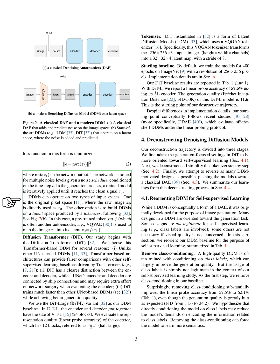DDMs can work with two types of input spaces. One is the original pixel space, where the raw image is used directly. The other option is to build DDMs on a latent space produced by a tokenizer. In this case, a pre-trained tokenizer is used to map the image into its latent representation. As a starting point, we train the models for 400 epochs on ImageNet with a resolution of 256 by 256 pixels. Our baseline results show a linear probe accuracy of 57.5% using half of the encoder of the model. The generation quality of this model is 11.6, measured by the Frechet inception distance. This is the starting point of our deconstruction process.